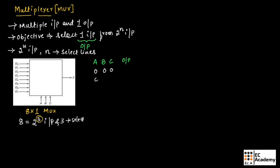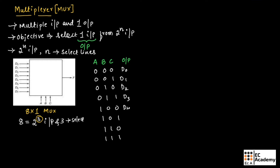The 8 combinations of select lines — 000, 001, 010, 011, 100, 101, 110, and 111 — will give outputs D0, D1, D2, D3, D4, D5, D6, and D7 respectively.